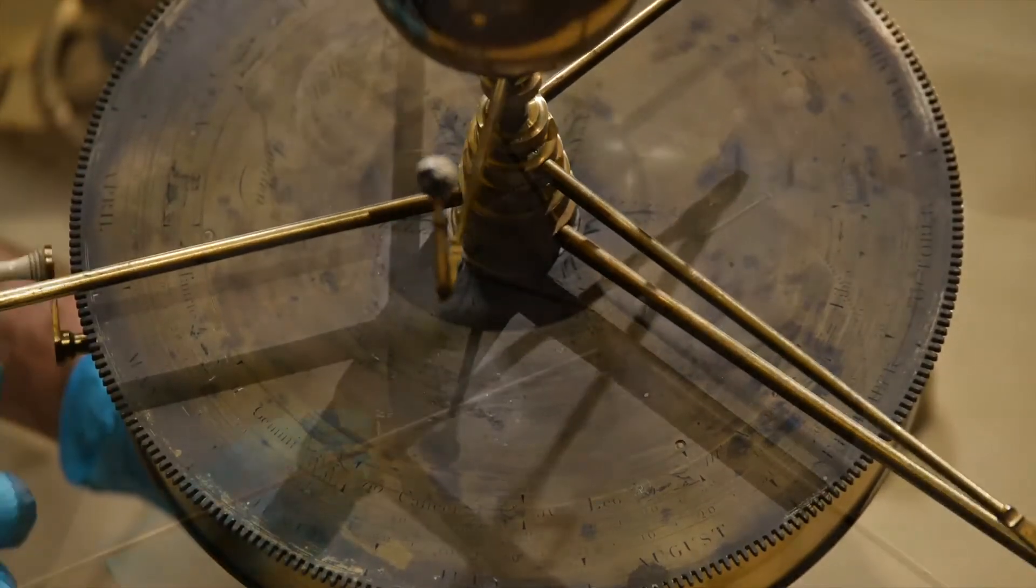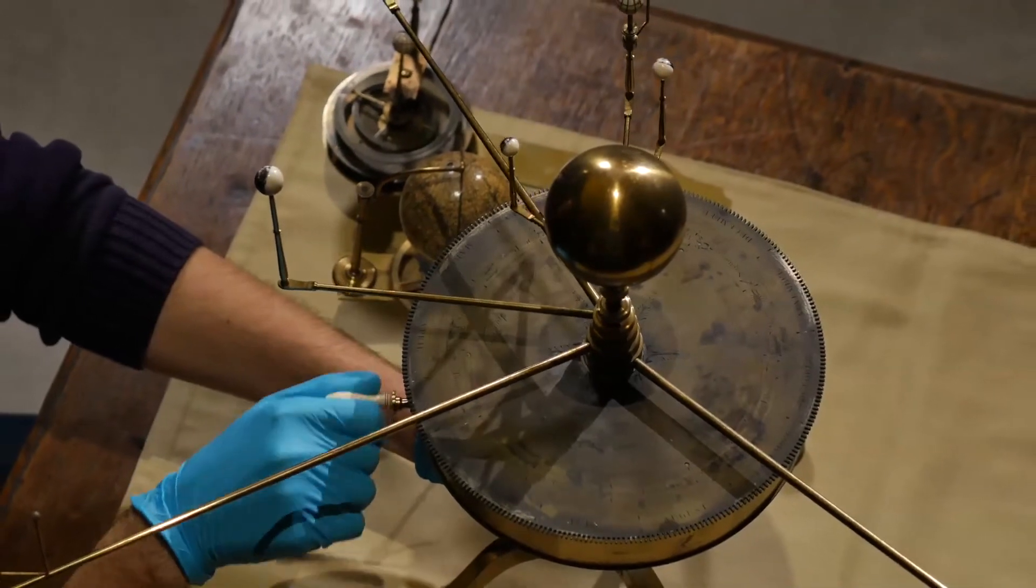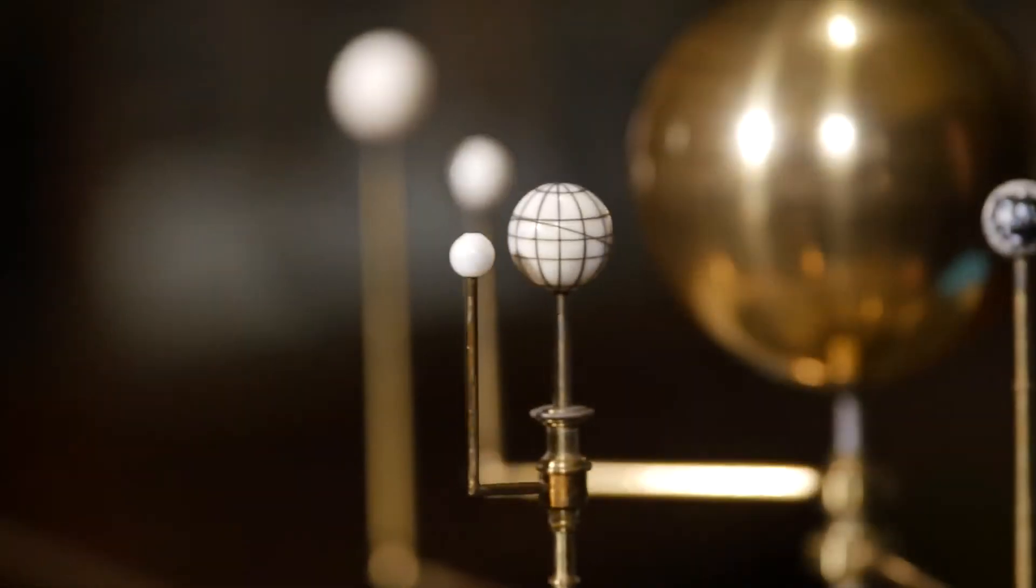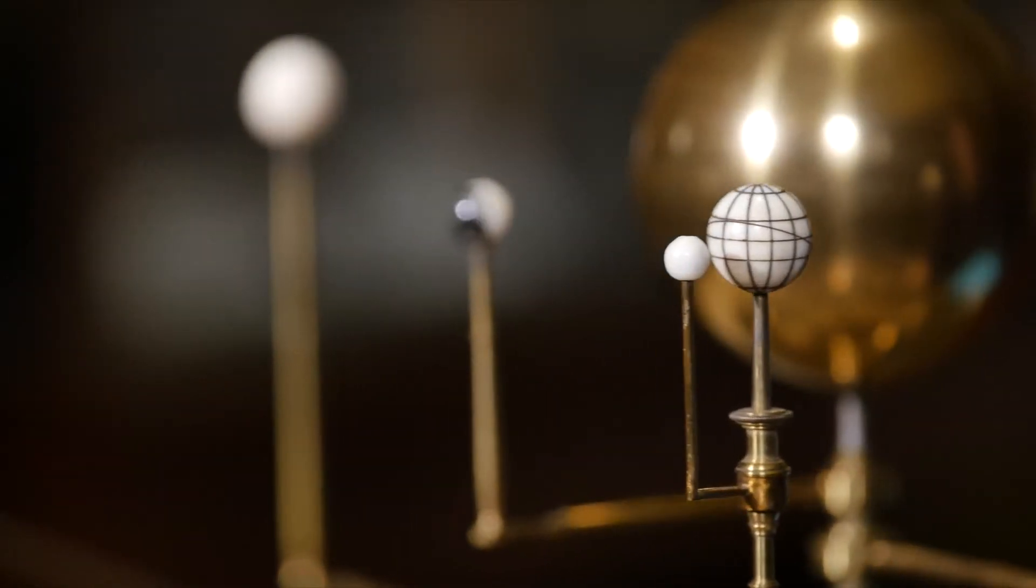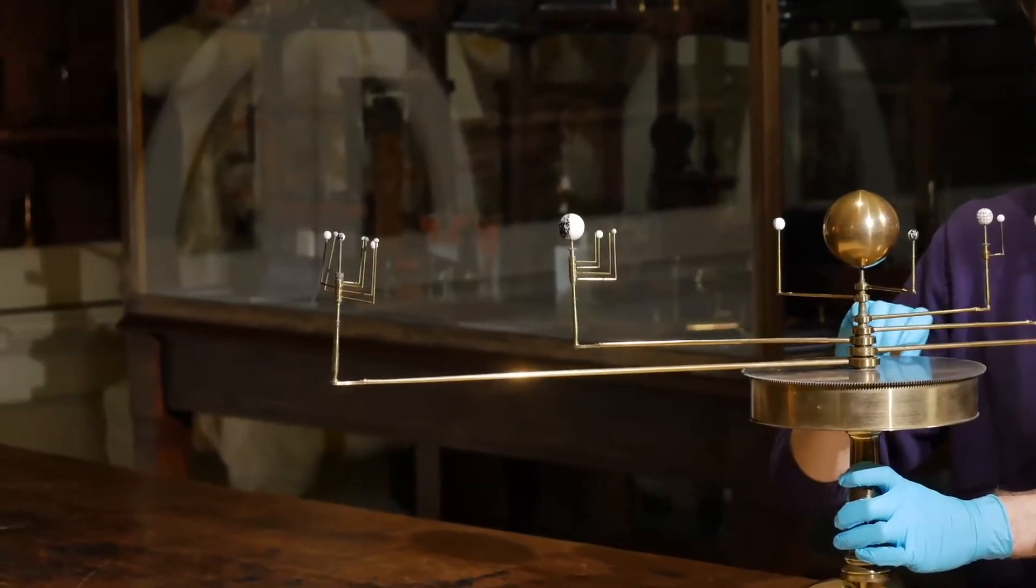These planets are not to scale, however, as it would be impossible to represent the vast differences between them on a model of this size. If this model were to scale with reference to the Sun, the Earth would be less than a tenth of a millimeter and would be positioned over 10 meters away, while Uranus would be positioned over 200 meters away.